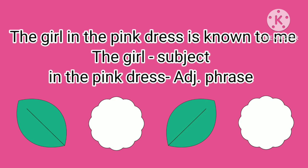Now, let's look at the next sentence: 'The girl in the pink dress is known to me.' The phrase in this sentence is 'in the pink dress.' It is a group of words. This phrase is an adjective phrase because it describes the noun 'girl.' So, this phrase is an adjective phrase.